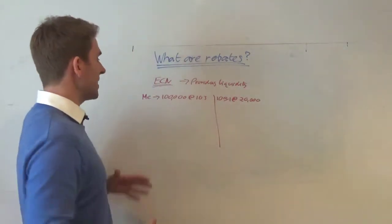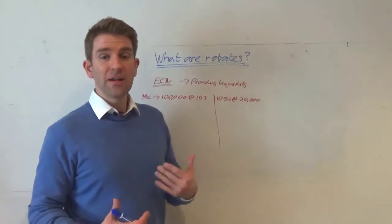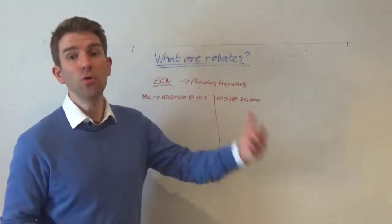An ECN would basically incentivize people to provide liquidity. So in other words, these guys would say, if you provide liquidity, I add liquidity, in other words, you're not removing liquidity.